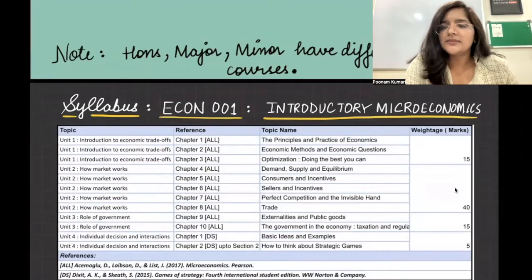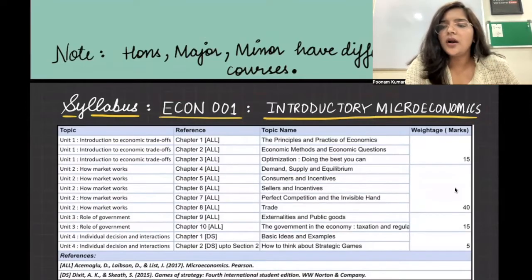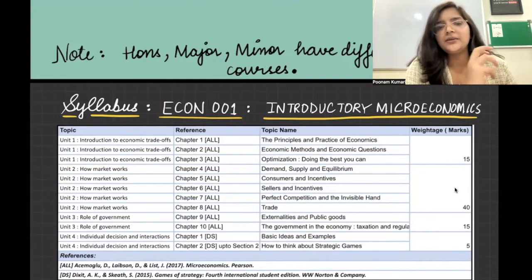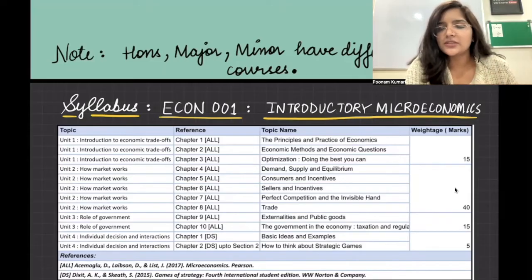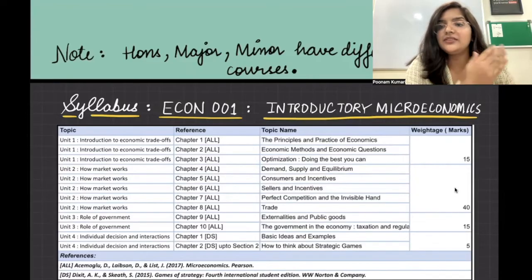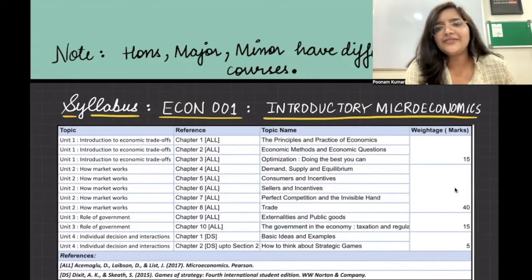For Introductory Microeconomics, the earlier course book used to be Mankiw, but now the course book has changed. The overall gist and objective of the paper has remained the same, but the course books have changed. Also, because this is the first time this course is being offered, whatever past year papers have been used previously will not be relevant for you. Your paper will be different from what came in previous courses.